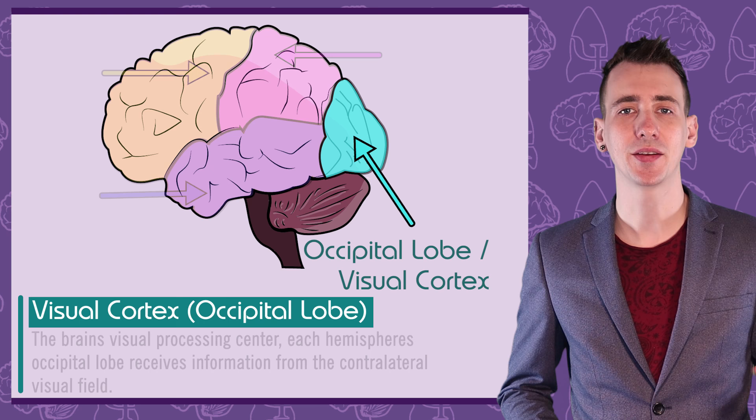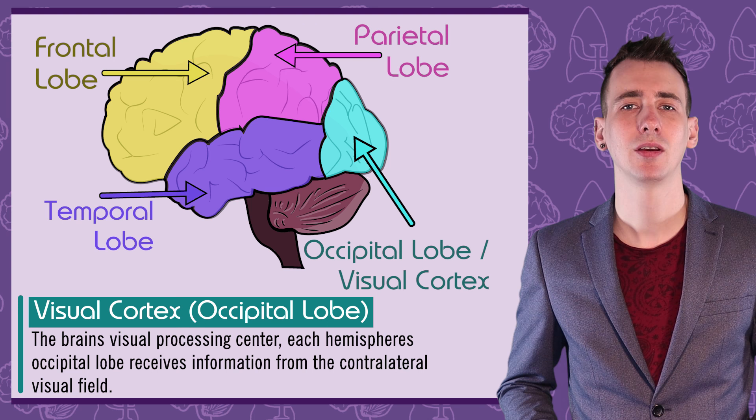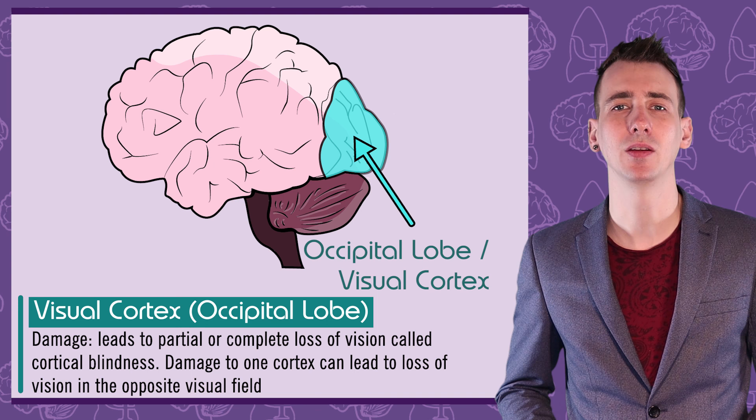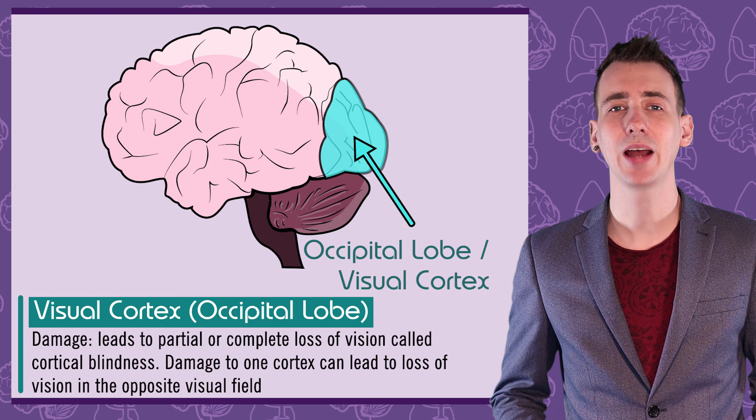Firstly, the visual cortex. The occipital lobe is the smallest of the four lobes of the brain, alongside the temporal, frontal and parietal, and is found at the back of the brain. The occipital lobe is known as the visual processing centre, containing the visual cortex. Damage to the visual cortex can cause partial or complete blindness, known as cortical blindness. As the left and right visual cortices are contralateral, damage to one will result in sight loss in the opposite visual field.